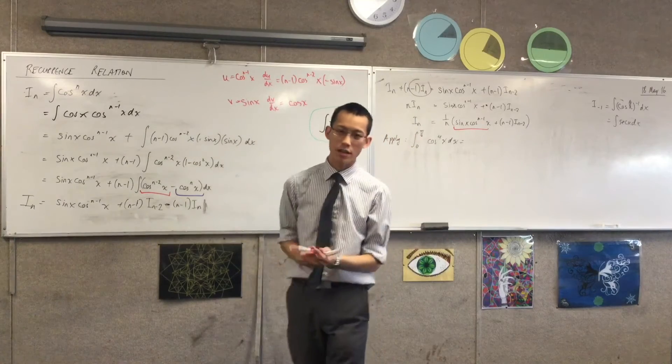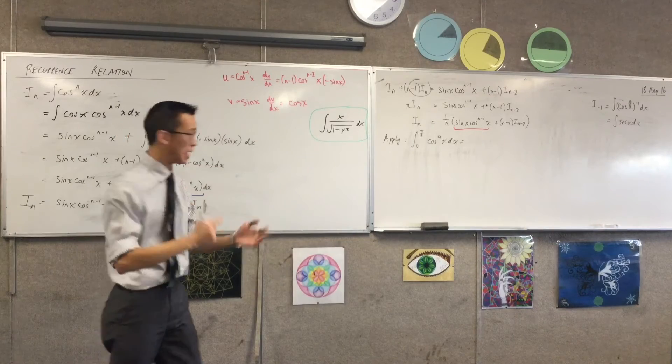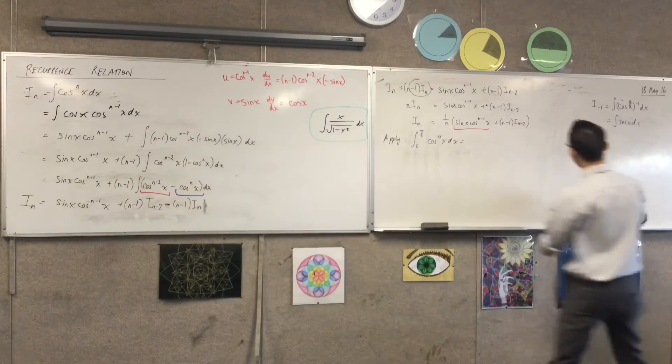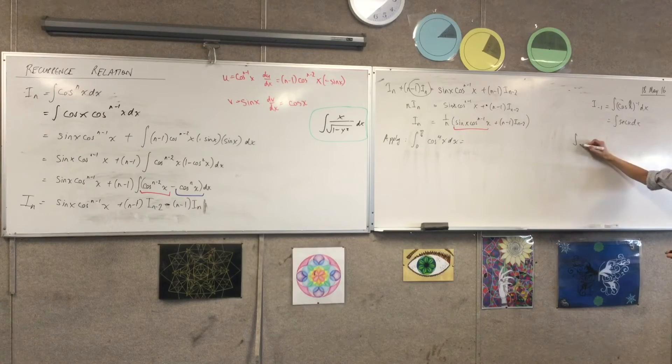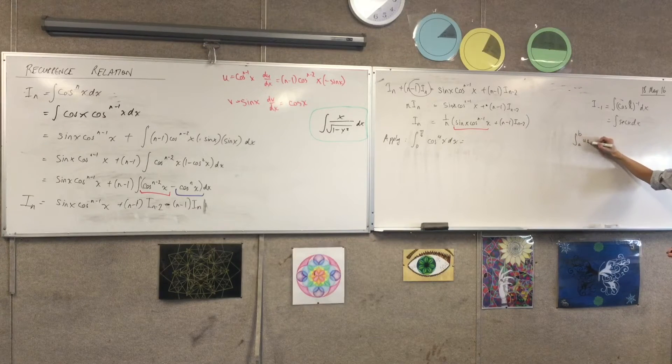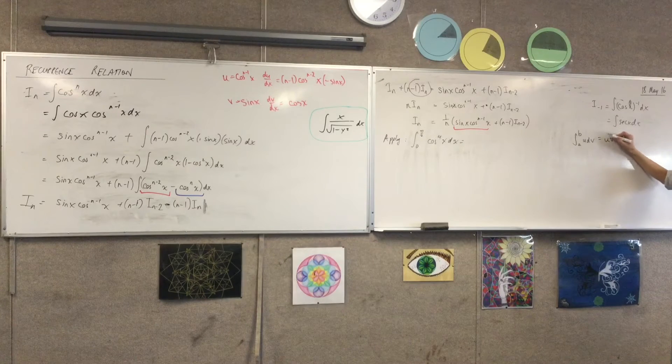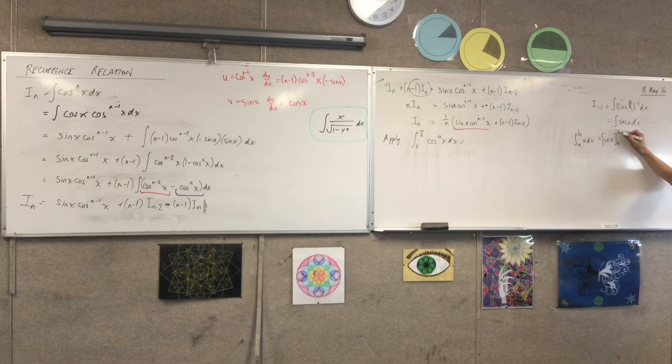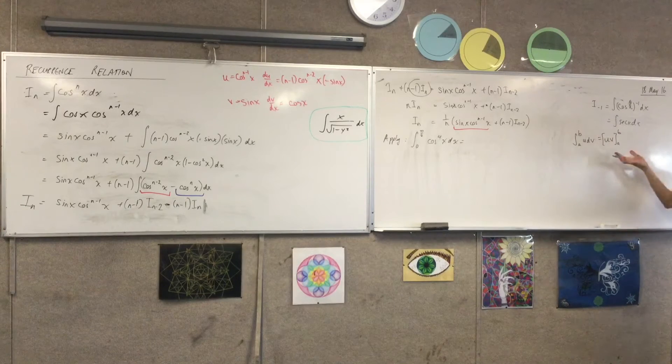We didn't deal with integration by parts in the context of definite integrals before, but it's not that complicated to include boundaries. All it would mean is, if you are not just integrating U dV, but if you're integrating from A to B, like so, right, what you've got here, this UV part, it's already been integrated, so it needs to get boundaries, right? Does that make sense? Just like if you integrate something else, it should get the boundaries.